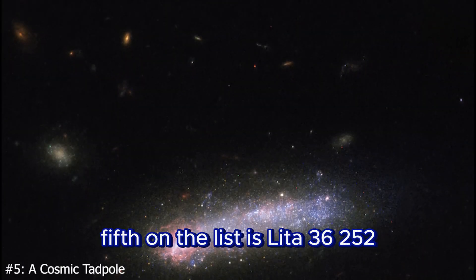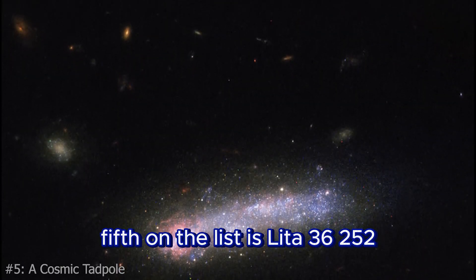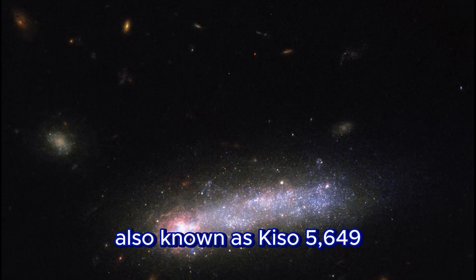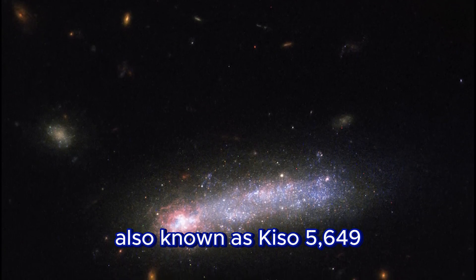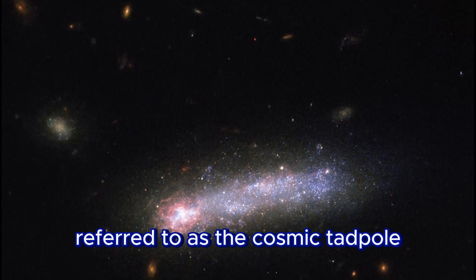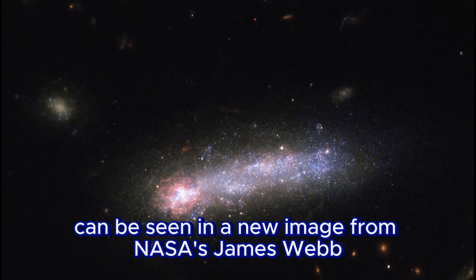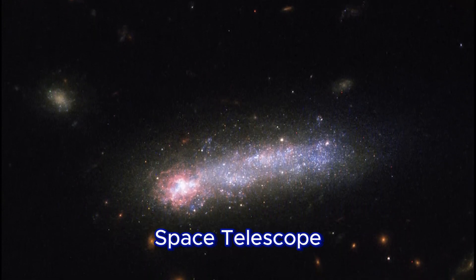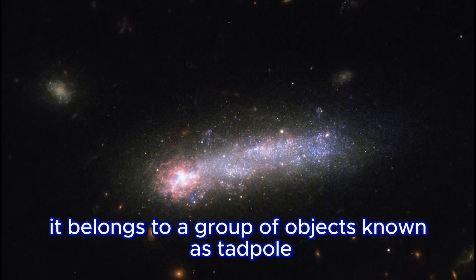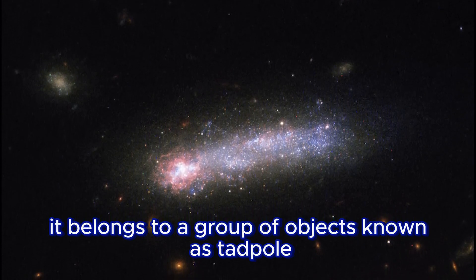Fifth on the list is LEDA 36,252, also known as KISO 5649, referred to as the Cosmic Tadpole. This small galaxy can be seen in a new image from NASA's James Webb Space Telescope. It belongs to a group of objects known as tadpole galaxies, characterized by a bright head and a long tail.